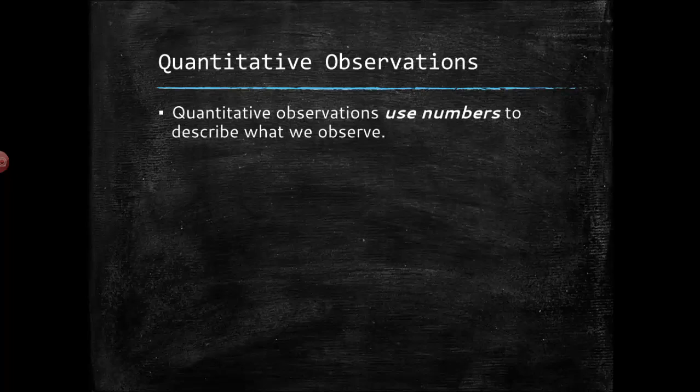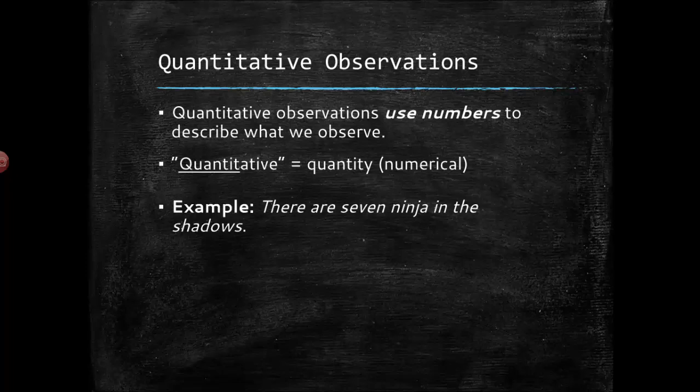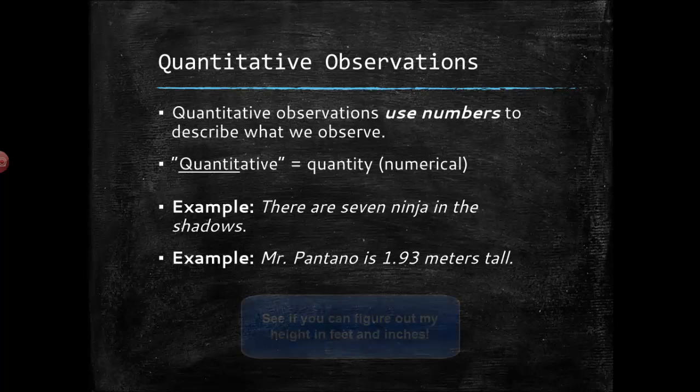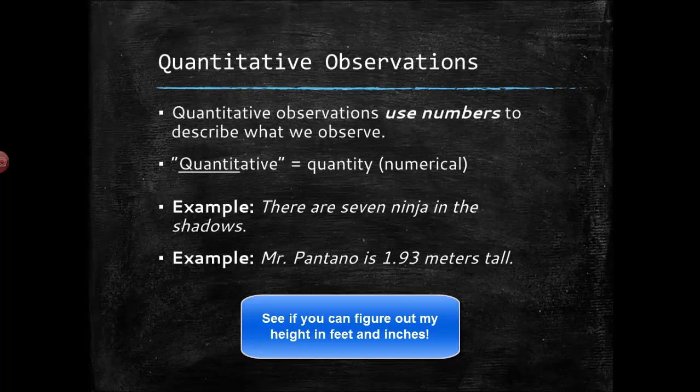Quantitative observations come from the word quantity which means number. Okay so quantitative observations are going to use numbers to describe what we observe. I can say for example there are seven ninja in the shadows. Seven, that's a number that describes a count, right, counting something. Or Mr. Pantano is 1.93 meters tall. That's an odd way of reporting height in the United States. How tall am I according to the way we would say it in the United States? See if you can figure that one out.